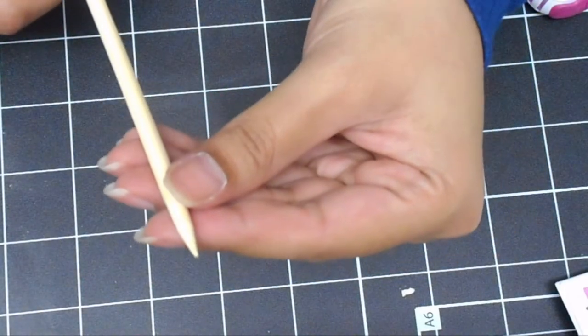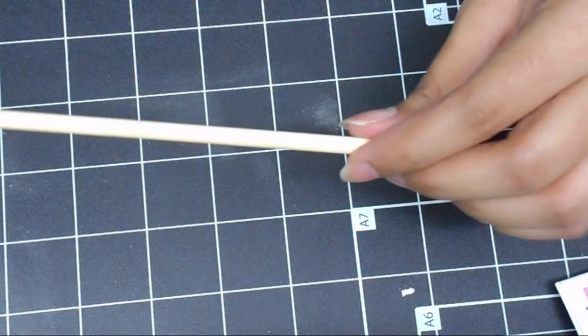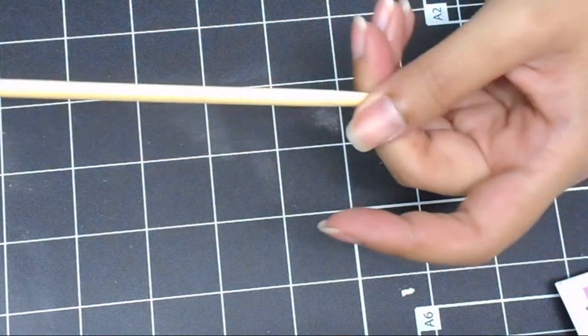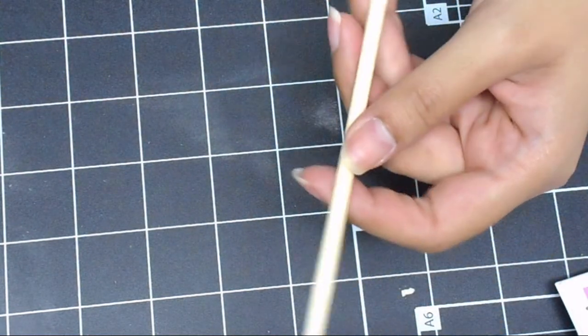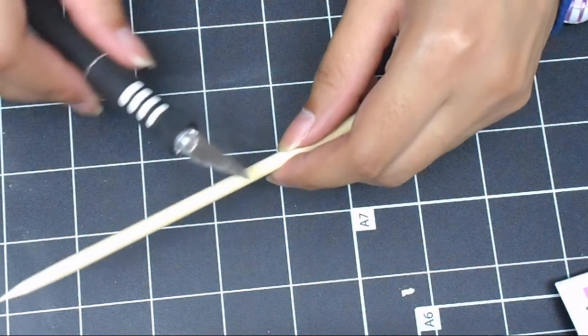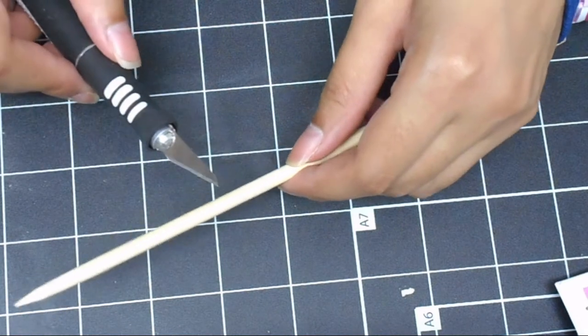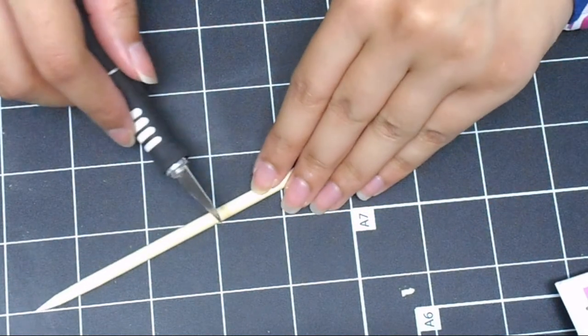Once you're satisfied with how the point is looking, you can either leave your orange stick this long or you can cut it with a cutter. So I'm just going to cut it to whatever length I want and we'll go from there.